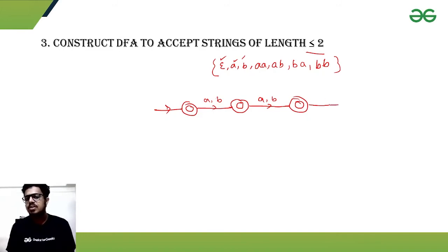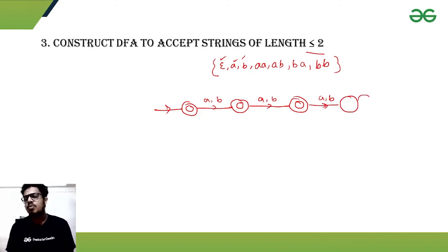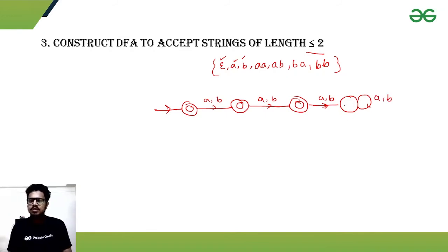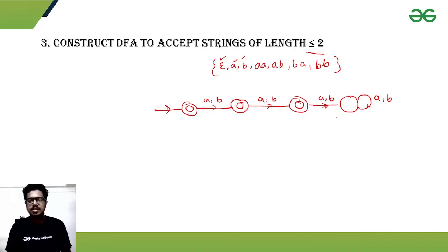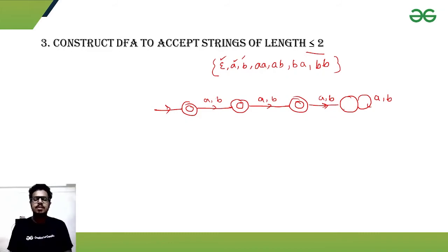To complete the DFA, we draw a dead state. If the length-2 final state receives another 'a' or 'b', it goes to the dead state. That means the string length is now 3 or more, so the string is rejected. This is how we handle the condition for length less than or equal to 2.